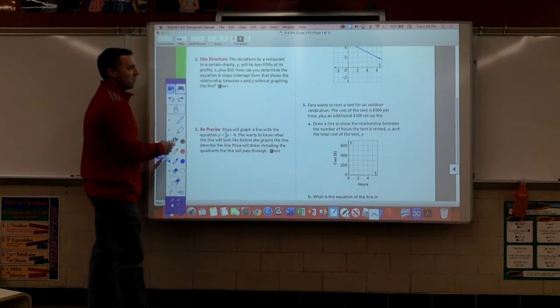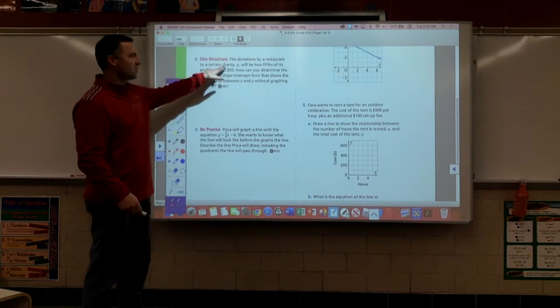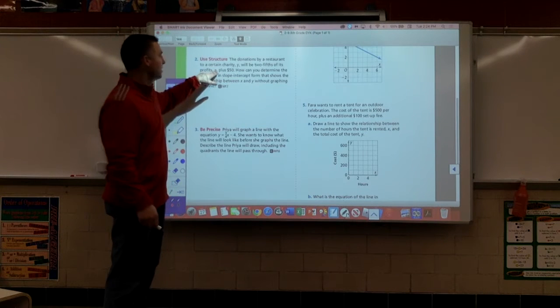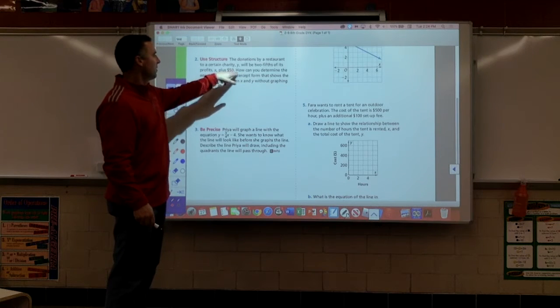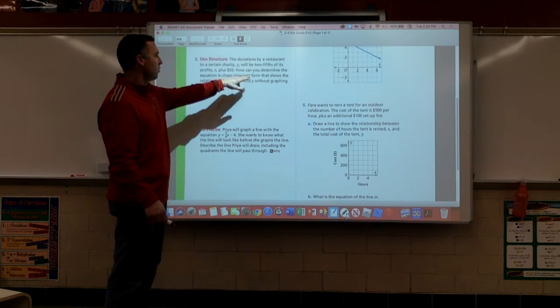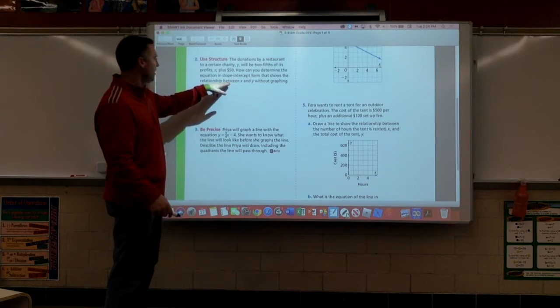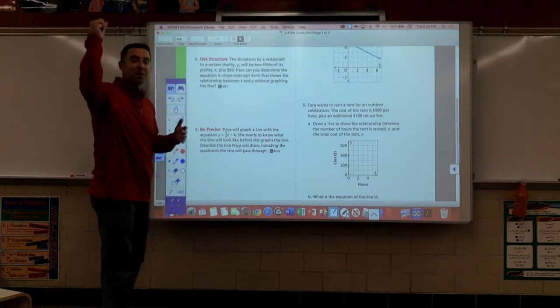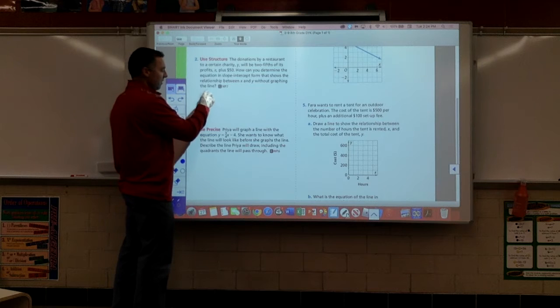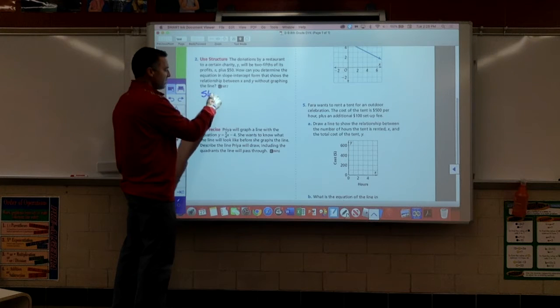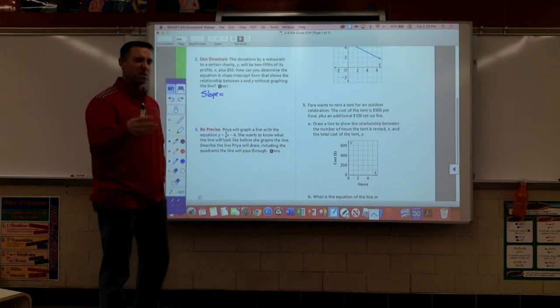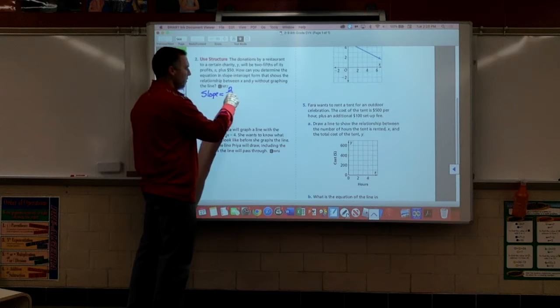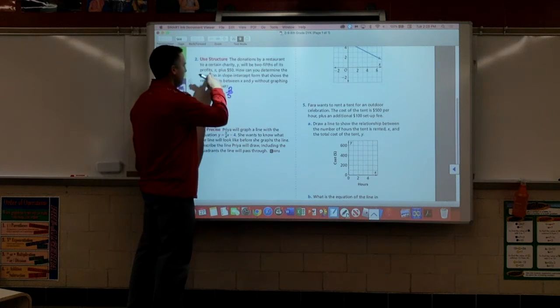Number two, the donations by a restaurant to a certain charity, y, will be two-fifths of its profits, x, plus 50 bucks. How can you determine the equation in slope-intercept form that shows the relationship between x and y without graphing the line? Well, folks, we first have to find the slope. Does it give us a slope? Does it give us our rate of change? Yes. It does. It says it's two-fifths of its profits.